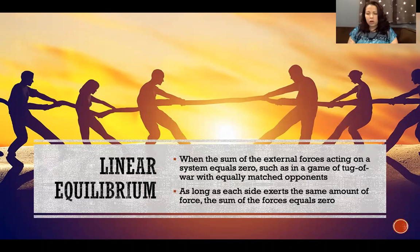In one direction, all of the forces would be positive, and in the opposite direction, all of the equal forces would be negative. When we add them all up, the sum is zero, and that is linear equilibrium.